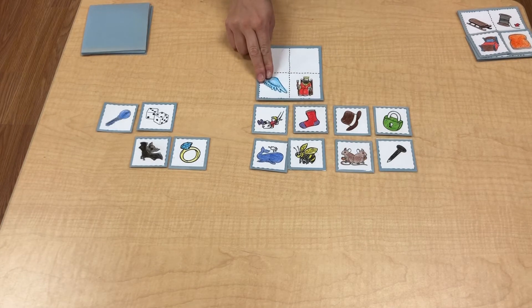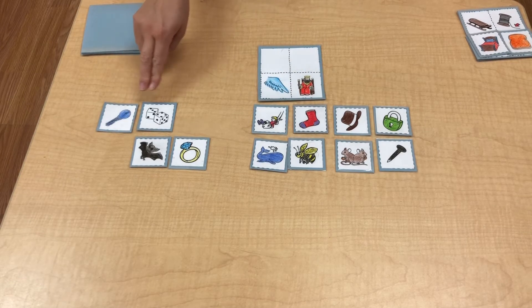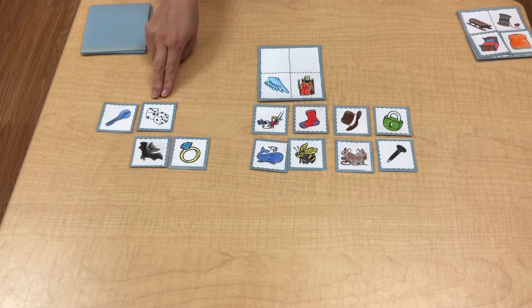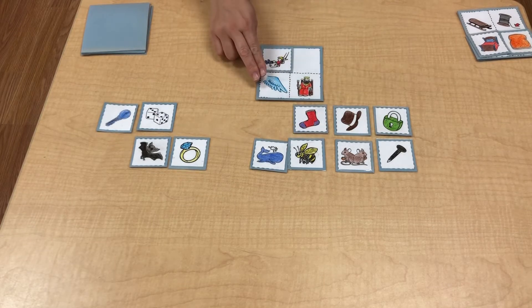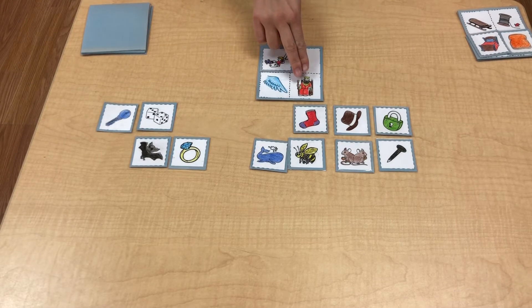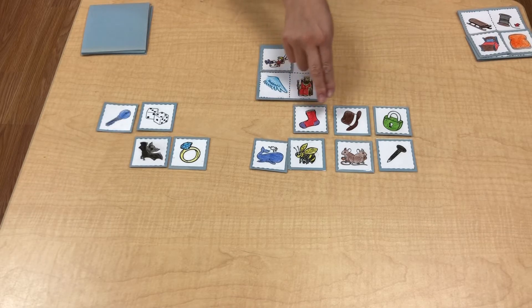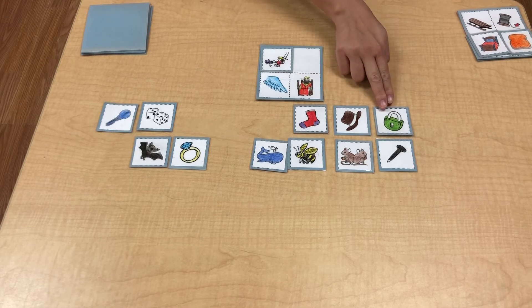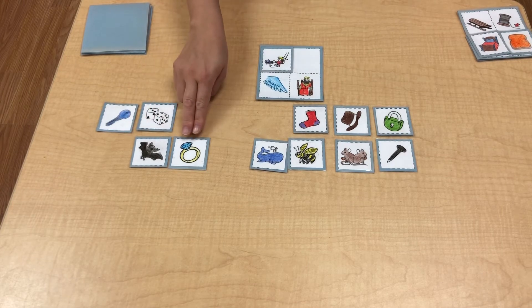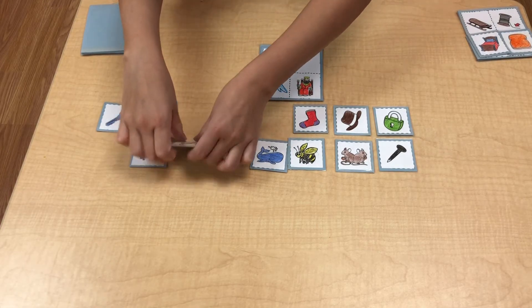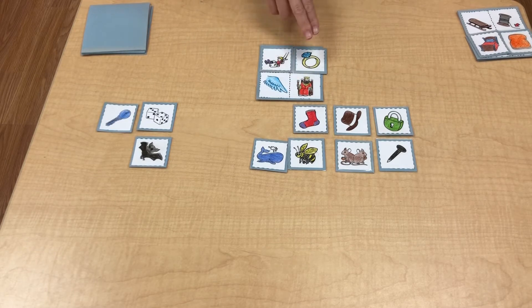Wing. King. Key. No. Dice. No. Swing. Yes. Wing. Swing. King. Swing. Sock. No. Hat. No. Lock. No. Bat. No. Ring. Yes. Wing. Ring. King. Ring.